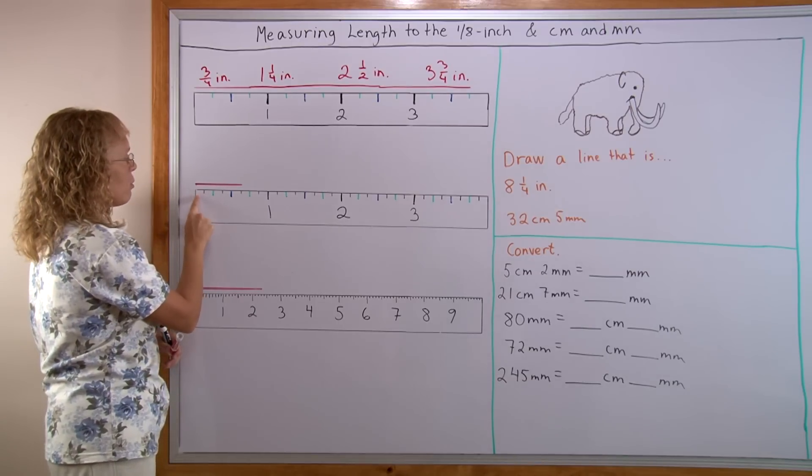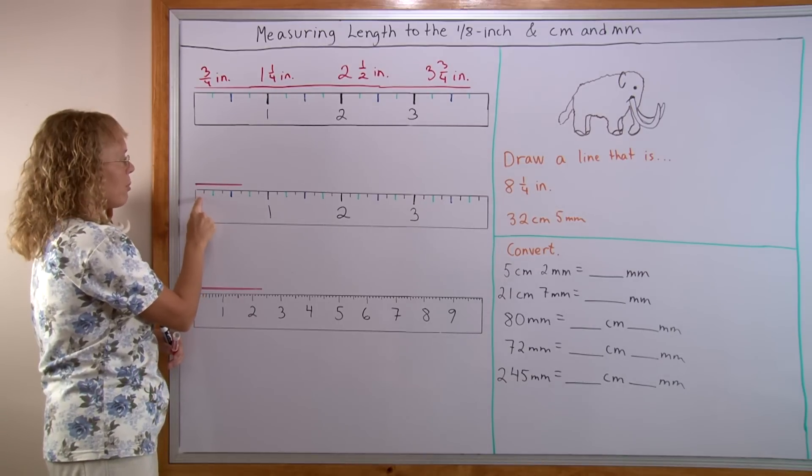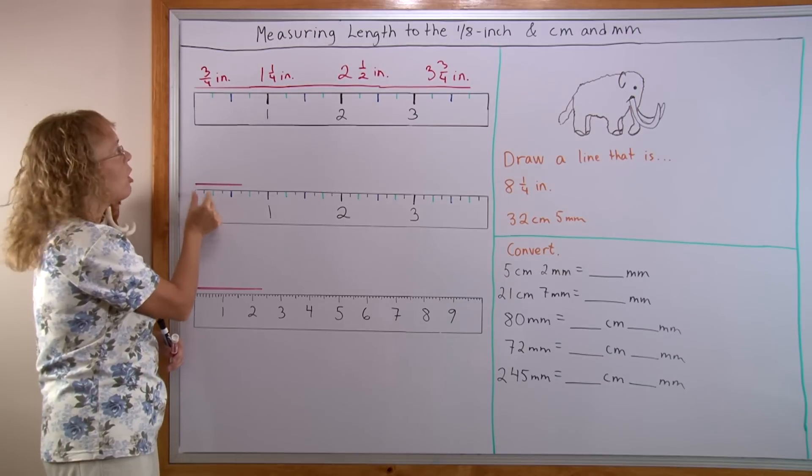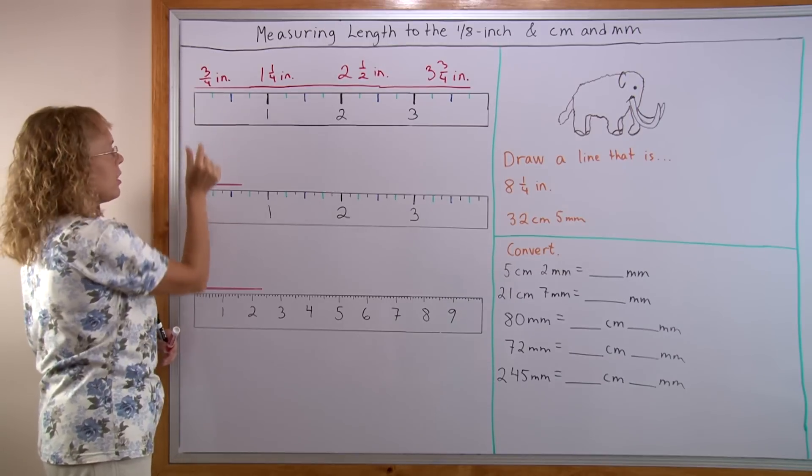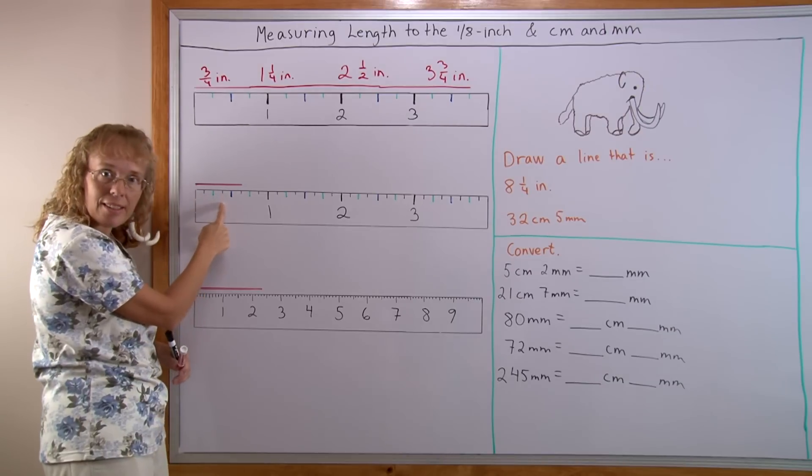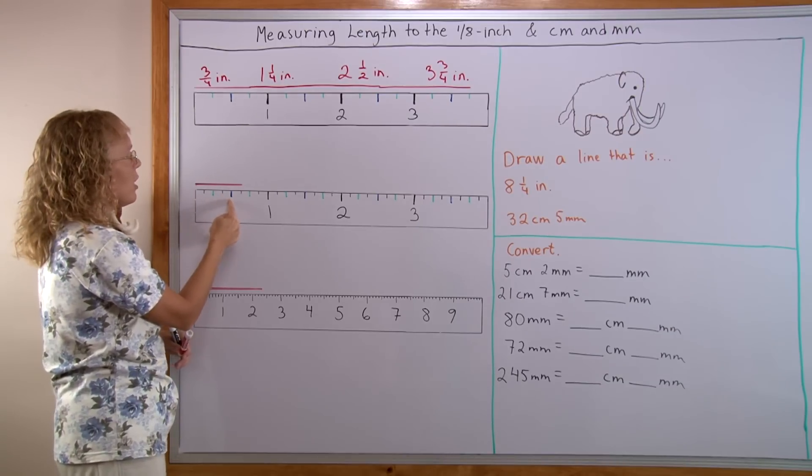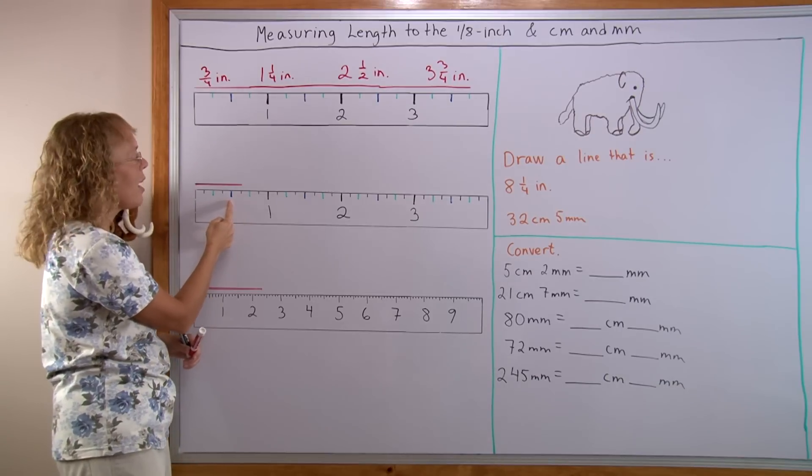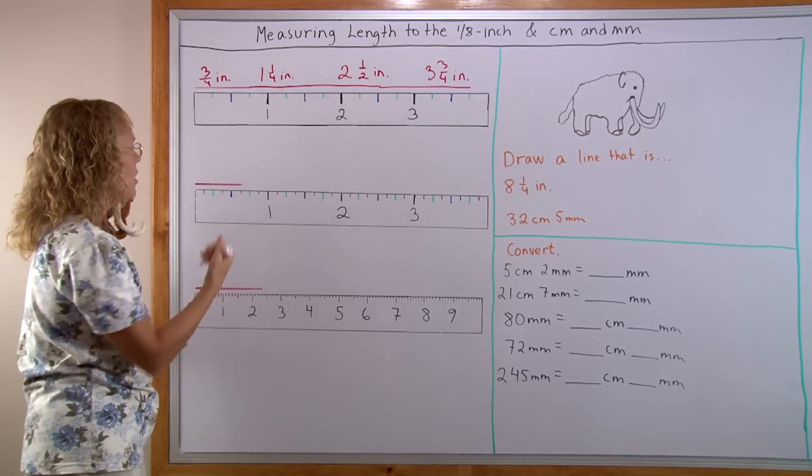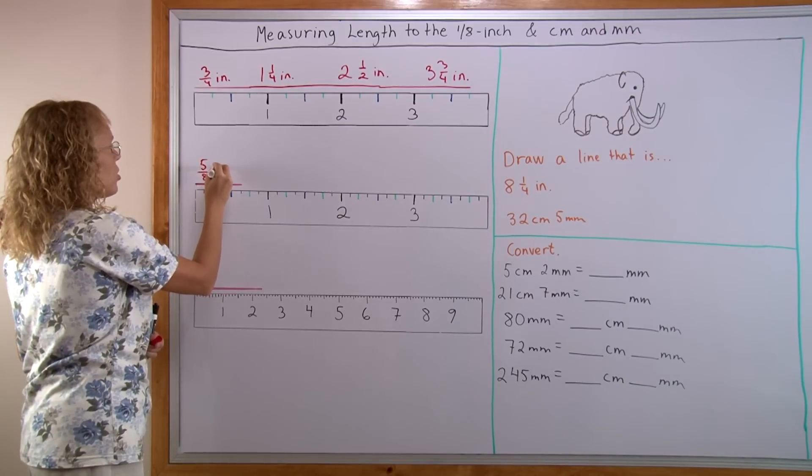This distance here would be 1/8 of an inch and from here to here is 2/8 of an inch which at the same time is also 1/4 of an inch. And from here to here would be 3/8 of an inch. From here to here is 4/8 or 1/2 and from here to here is 5/8, that's my red line.